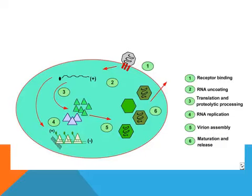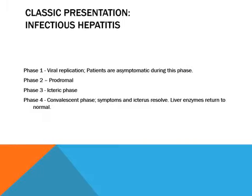This diagram shows the receptor to which the virus has bound and entered the cell. It has released the RNA encoding, then translocation and proteolytic processes lead to RNA replication. After replication, the viral particles are assembled and released as mature viruses. Whenever there is an infection, there is usually a phase in which the virus replicates.